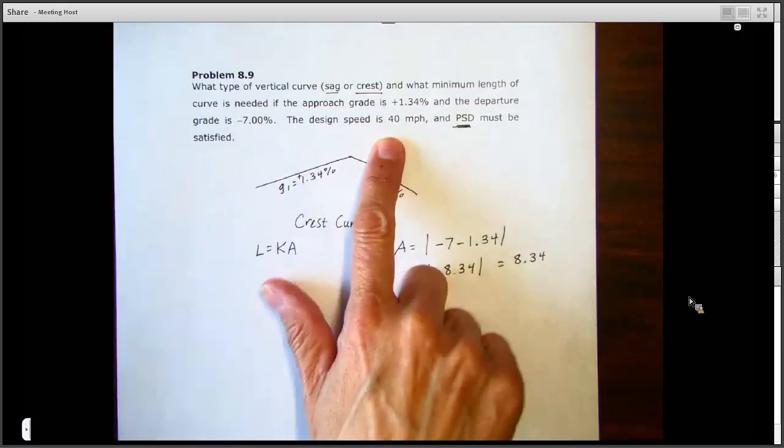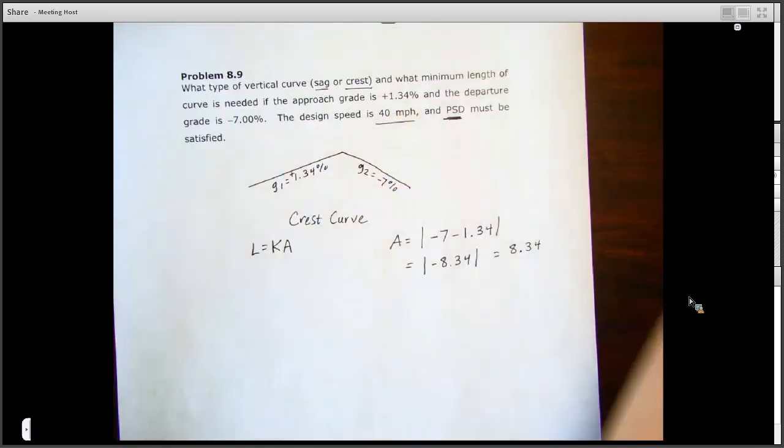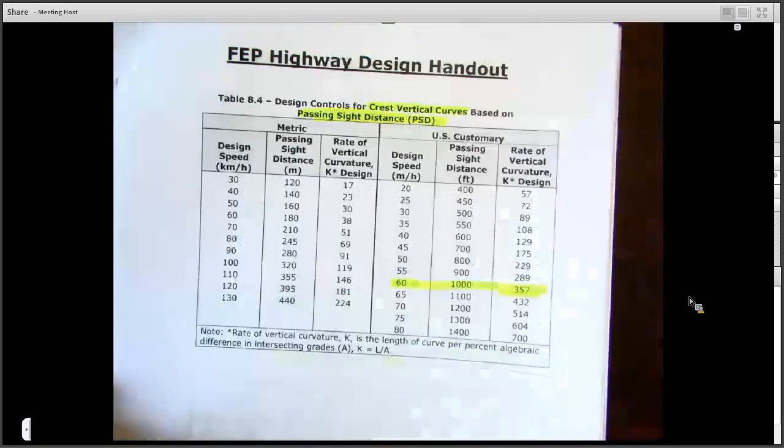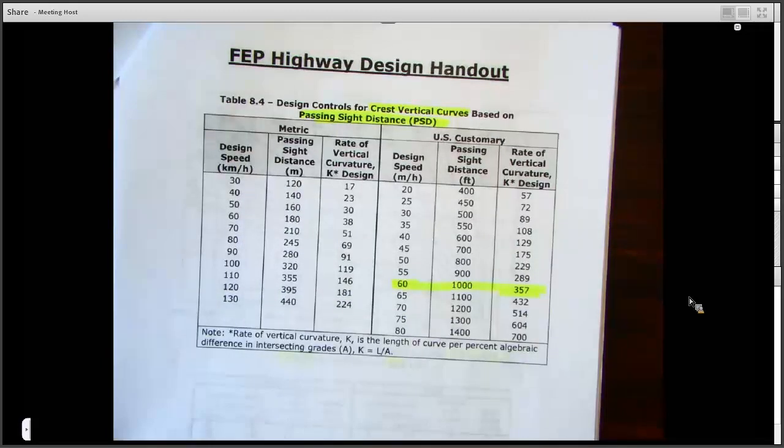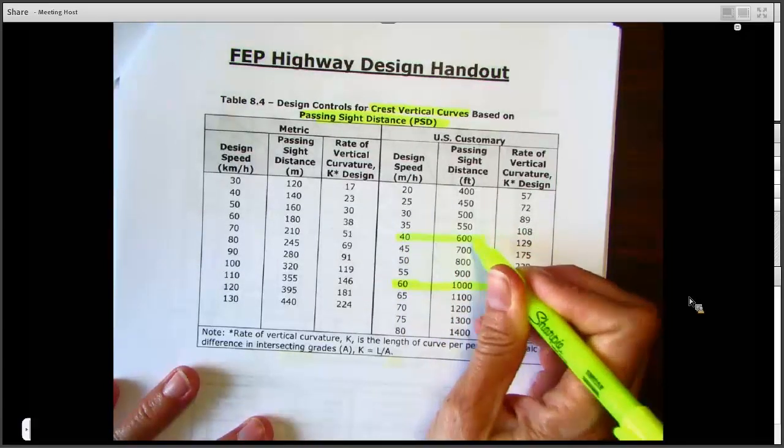And we'll come here, this is dictated by our design speed, and in our problem the design speed is 40 miles per hour. So we'll grab 40 miles per hour off of this chart.